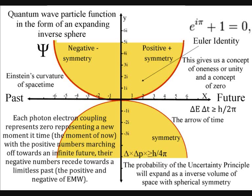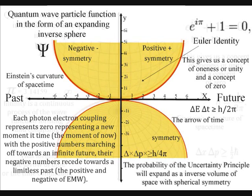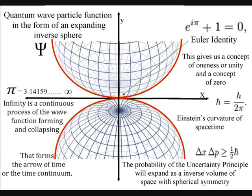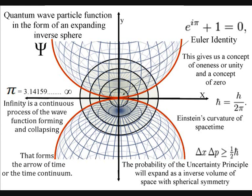I hope to base this theory on pure mathematics, and therefore pure physics. I believe this can be done in just three dimensions, and one variable, time. Each photon-electron coupling represents zero, representing a new moment in time, the moment of now, with the positive numbers marching off towards an infinite future, and the negative numbers receding towards the limitless past, the positive and negative of electromagnetic waves.